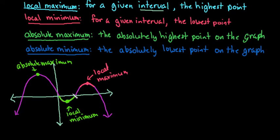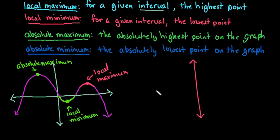For this particular graph, because it continues in both directions forever and ever, there is no absolute minimum. We don't have an absolute minimum because this goes forever to negative infinity in both directions. So let me do a graph that does have an absolute minimum. Over here, I'm just going to draw another grid with my XY axes, and I will do multiple videos highlighting maximums and minimums for different scenarios.